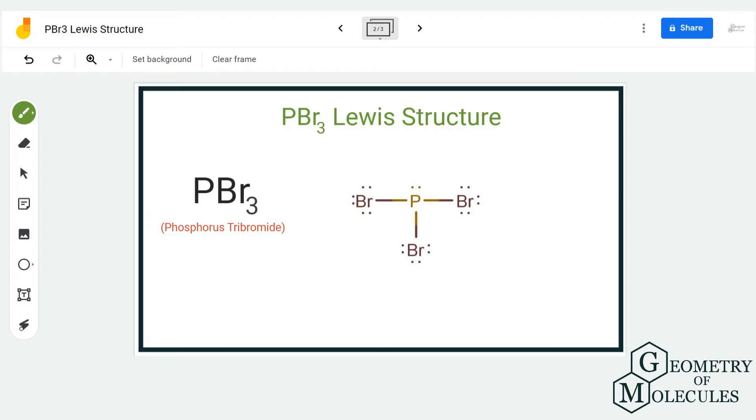If you count the number of valence electrons, it is the same for all atoms. Even phosphorus has eight valence electrons after sharing three electrons with bromine, and bromine also has eight valence electrons in its outer shell.